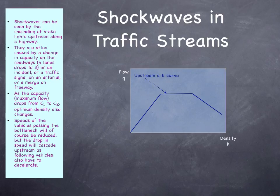What's happening here is the maximum flow is dropping from C1 to C2. As the capacity drops, the speed drops.